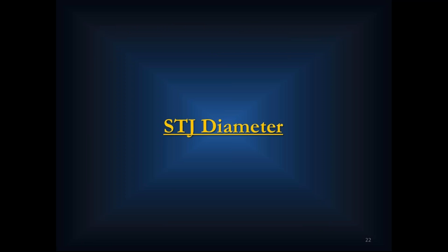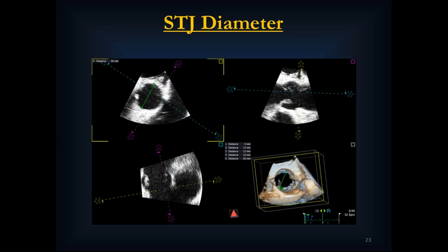The sinotubular junction diameter is also important, specifically for balloon-inflatable devices. If the sinotubular junction size is close to or smaller than the device itself, with a shorter aortic root height, it could be an issue either for the balloon reaching into the sinotubular junction or for the device itself in a low sinus height. The sinotubular junction measurement can warn us of a possible risk of sinotubular junction rupture.